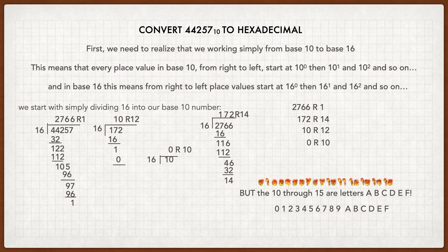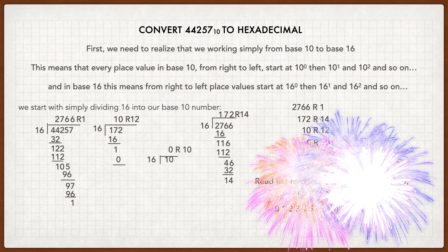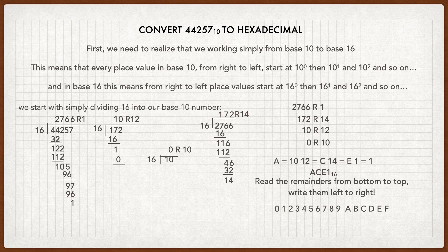So for our solution, we read the remainders from bottom to top and write them from left to right. So we have A equals 10, C equals 12, E equals 14, and 1 equals 1. So our answer is ACE1 to the base 16 hexadecimal.